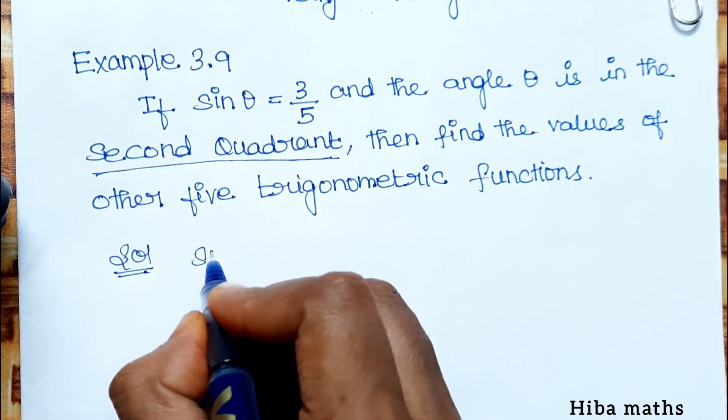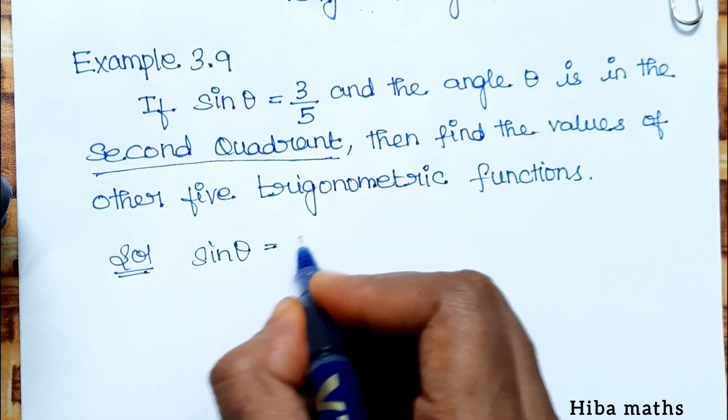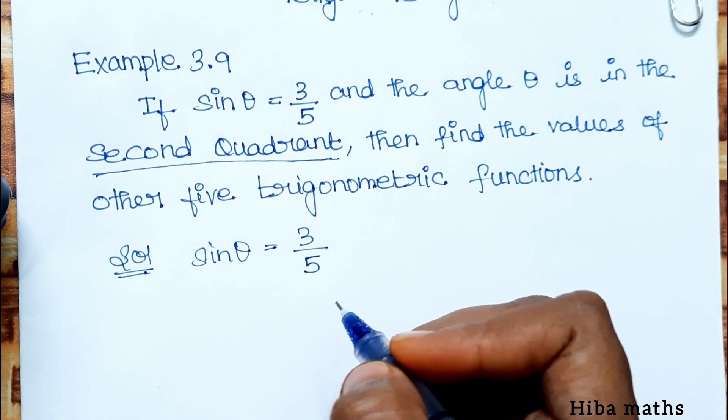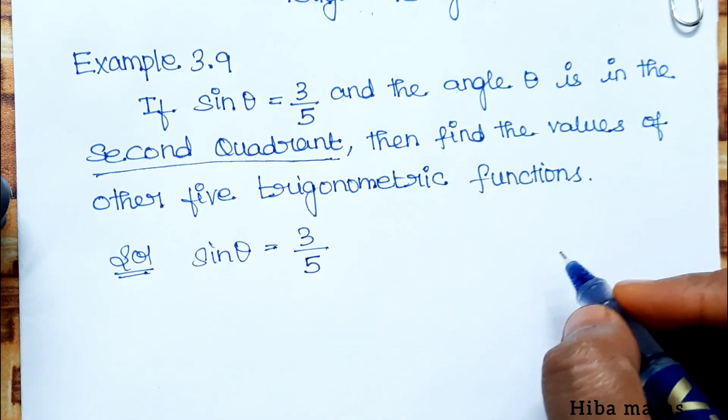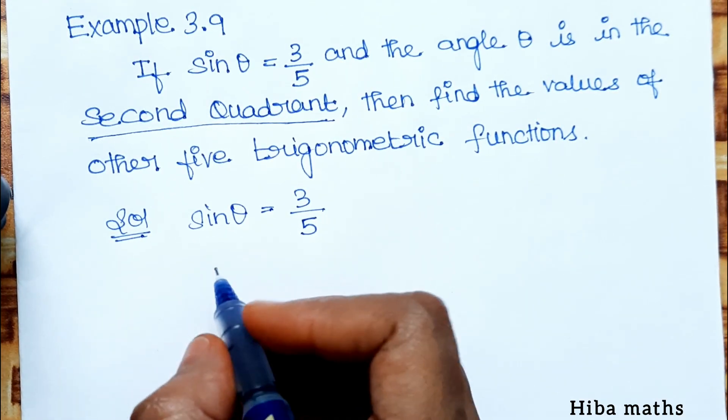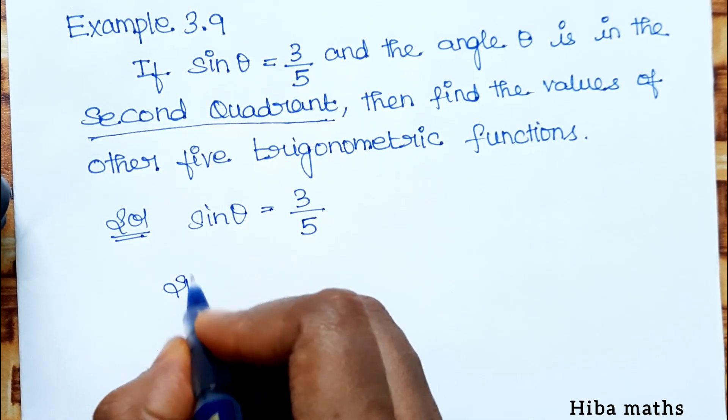In the solution, sin θ equals 3 by 5. This is normal in lower classes using opposite, hypotenuse, and adjacent. But in the 11th, there are formulas to be used, so let's follow it.